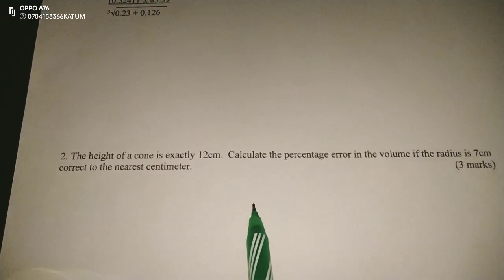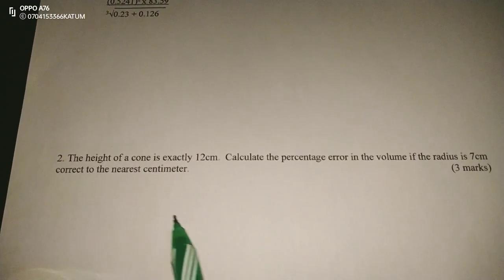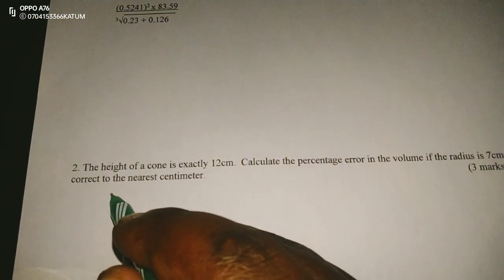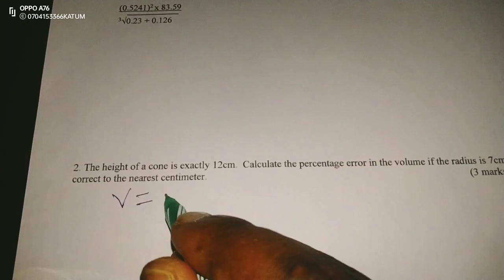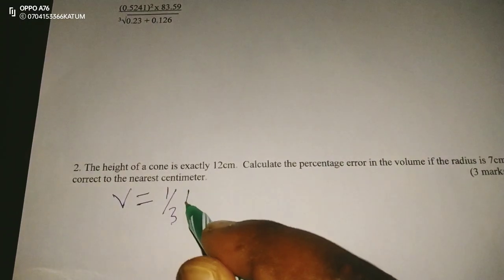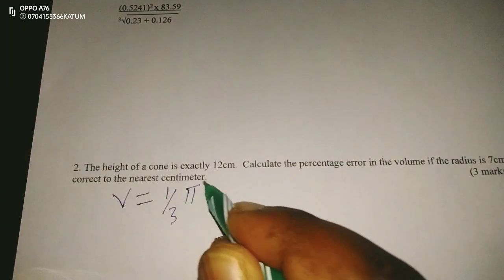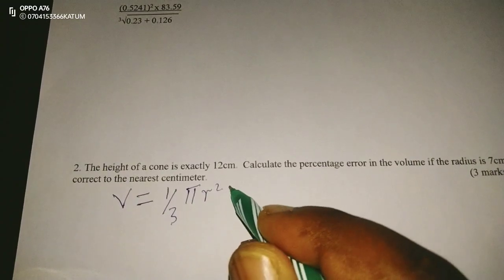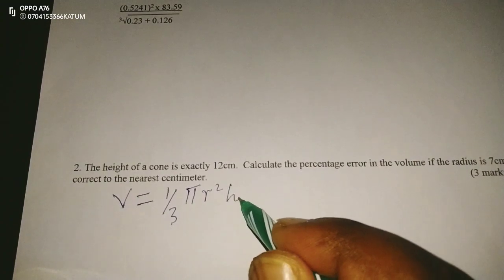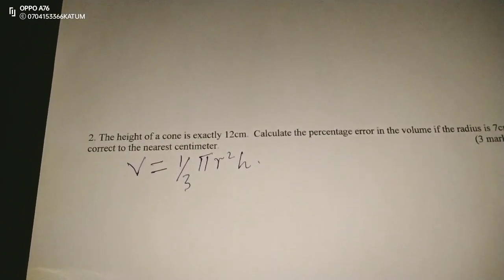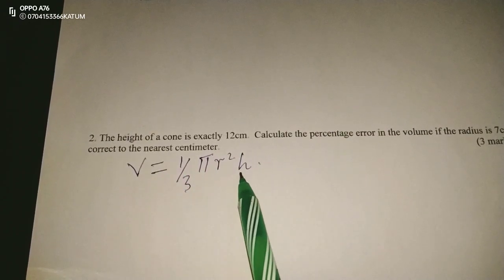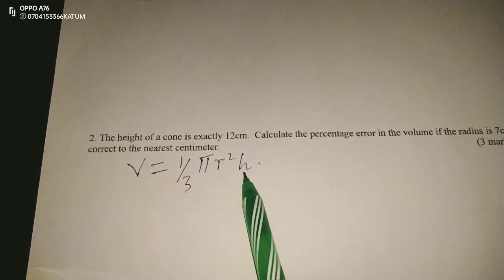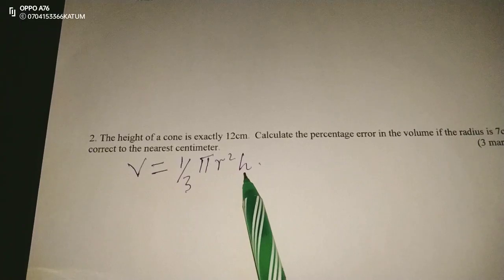First of all, the volume of a cone is given by one-third pi r squared h. The dimensions given are the radius and the height; the others are constants.